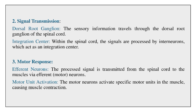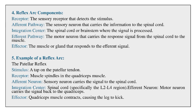Motor response: The processed signal is transmitted from the spinal cord to the muscles via efferent motor neurons. Motor neurons activate specific motor units in the muscle, causing muscle contraction. The reflex arc components are: receptor, afferent pathway (sensory neuron to spinal cord), integration center (spinal cord or brainstem), efferent pathway (motor neuron to muscle), and effector (the muscle or gland that responds).